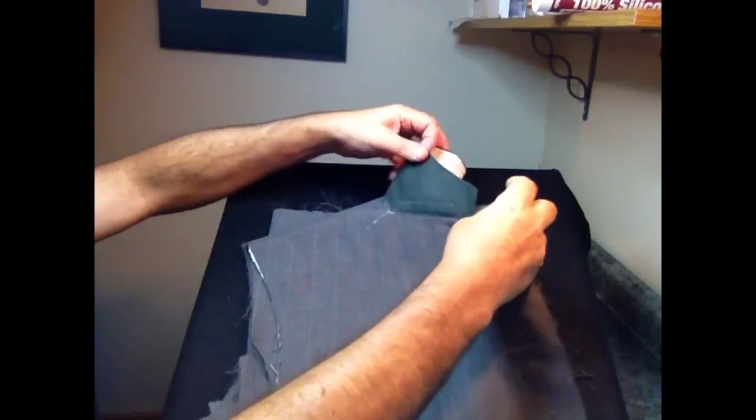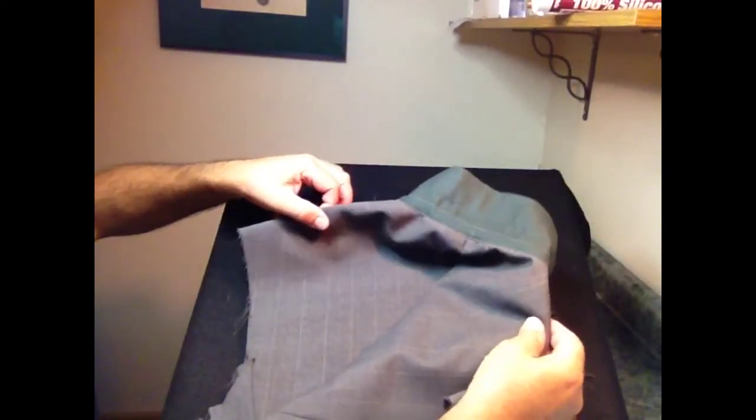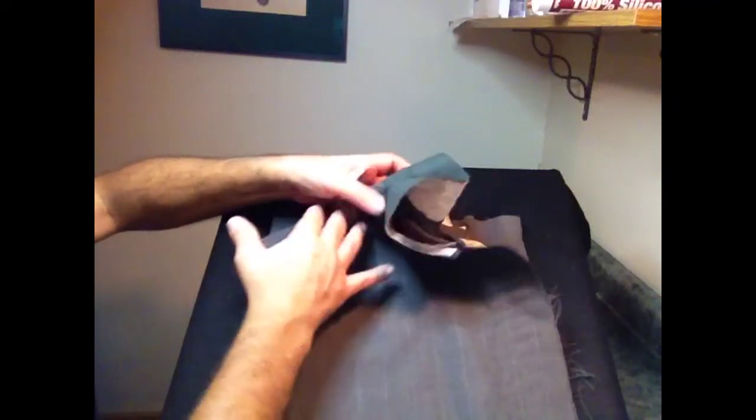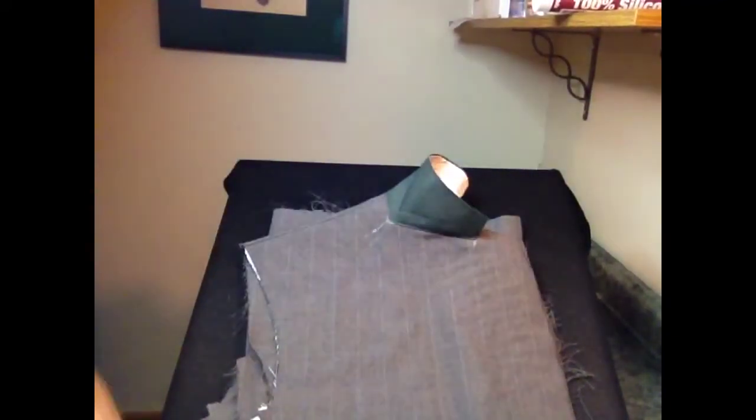So again, this is the way your under collar should look attached to the coat shell. And our next step is to move on to the sleeves.